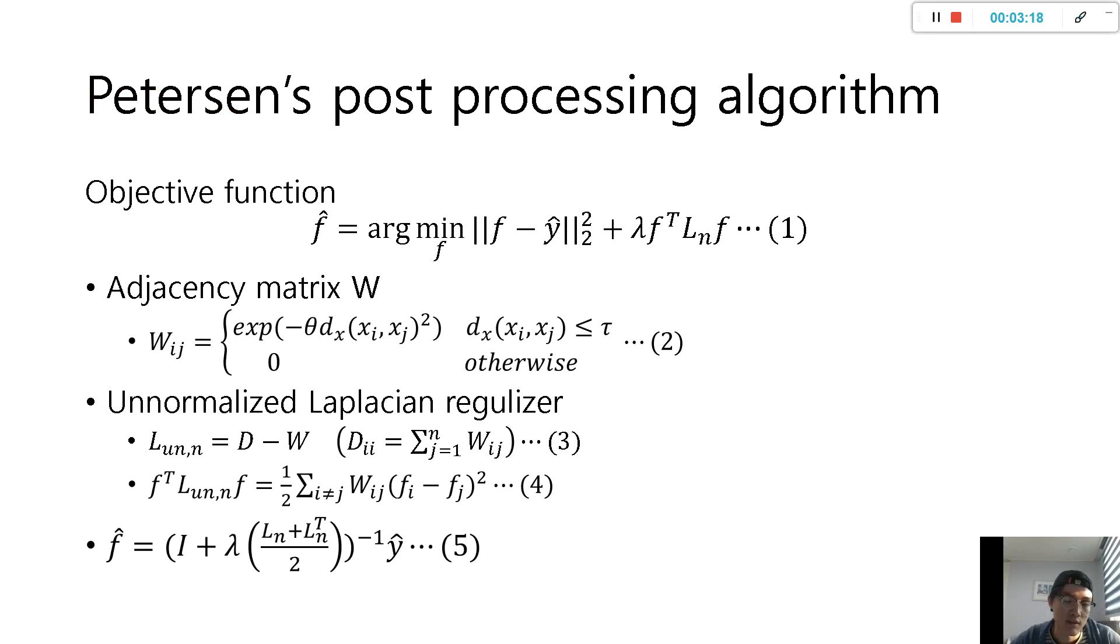Then I will talk about this paper's algorithm. This paper's algorithm selects the objective function as equation 1. In equation 1, the objective function is f, and y is output, lambda is a constant, and Ln is Laplacian matrix.